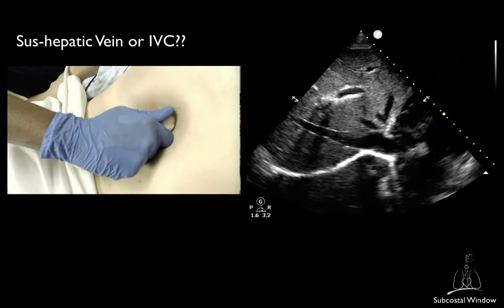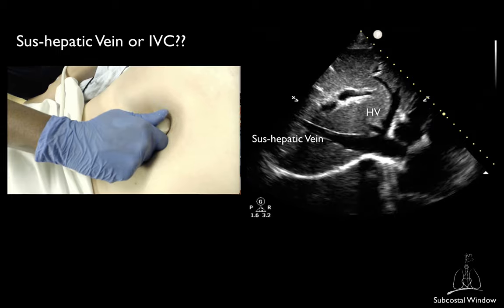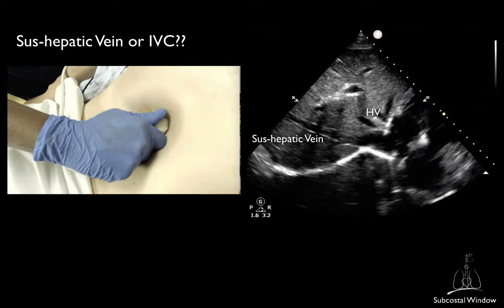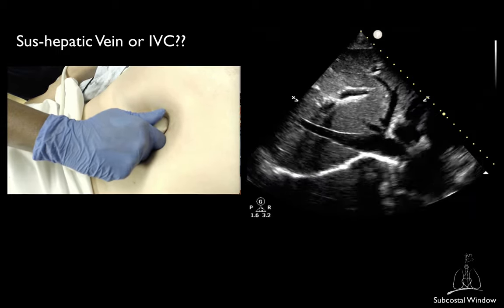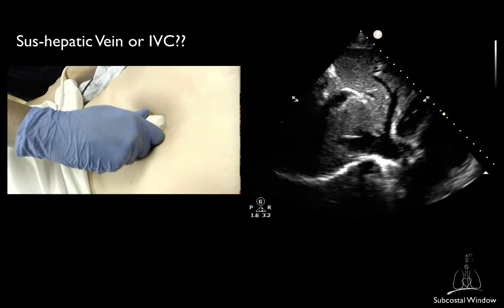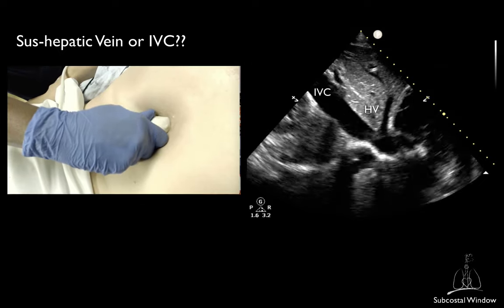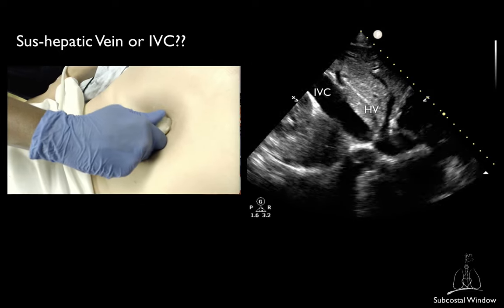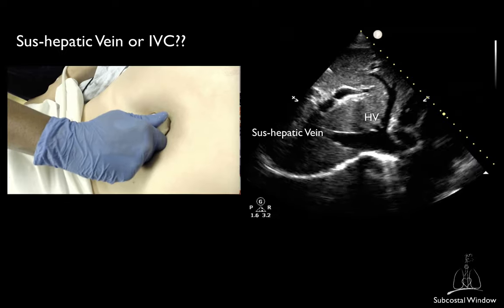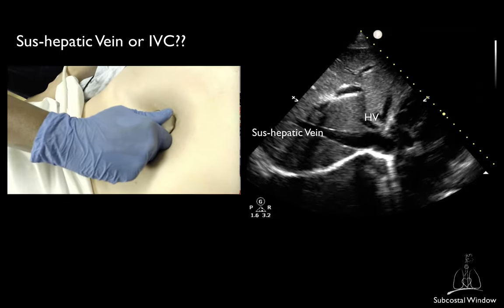Make sure that you are not imaging the subhepatic vein, which can have an insertion in the IVC very close to the IVC-RA junction. They can be recognized as they are more oblique than the IVC, go into one of the lobes of the liver, and also have multiple ramifications.